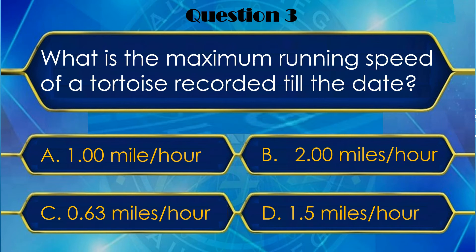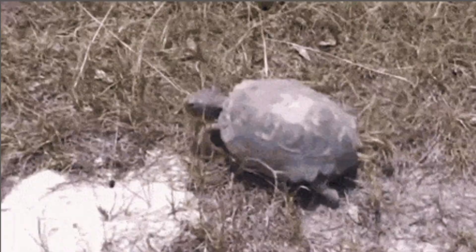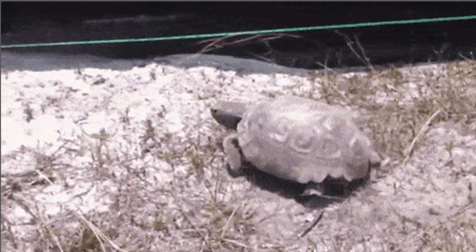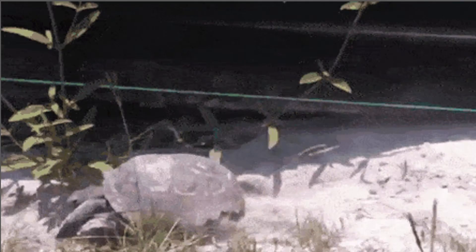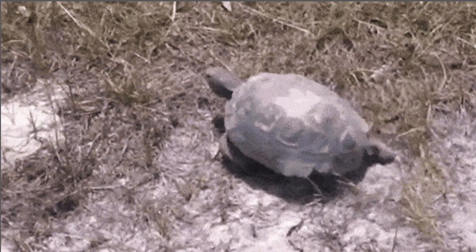C — 0.6 miles per hour. Okay, let me check. Yes, you have given the right answer. Actually, tortoise ek bahut hi slow moving animal hai. Aur uska reason yeh hai ki iske oopar bahut hi bhaari shell hota hai, jiski wajah se bahut fast nahin move kar paata hai. Aur iski legs ka structure kuch aisa hai ki yah crawl to kar sakta hai.